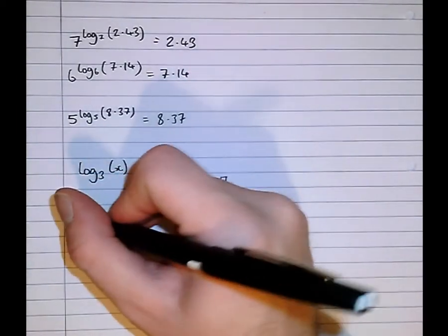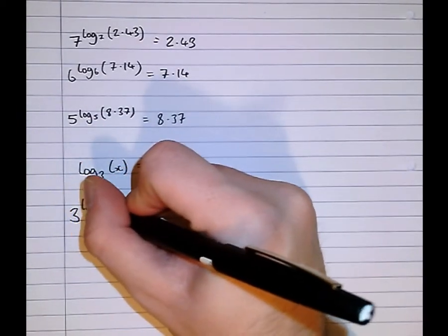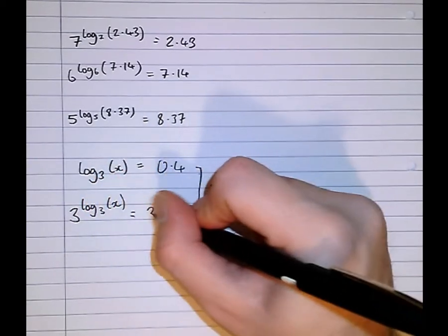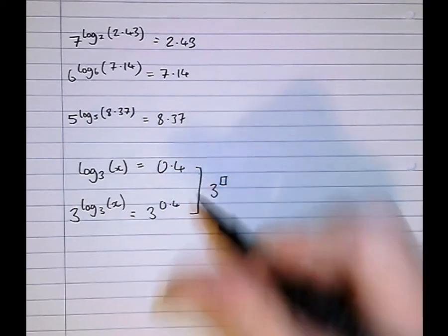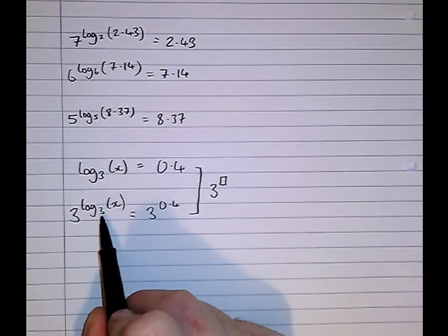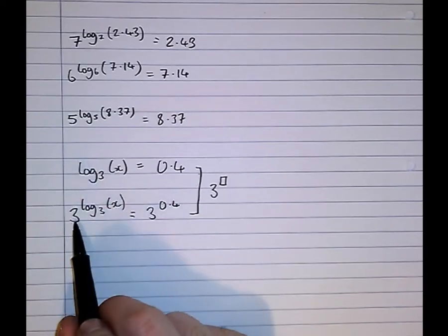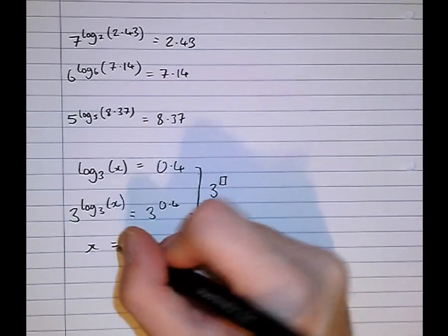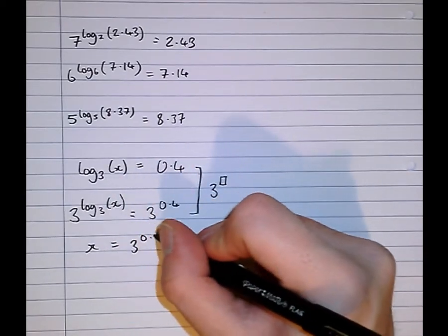That means raise both sides as a power of 3. So we get 3 to the power of log to the base 3 of x equals 3 to the power of 0.4. Now this says what power do we have to give 3 to get x, and then we give 3 that power to get x.